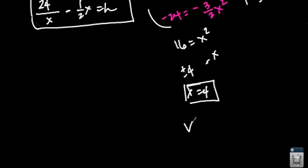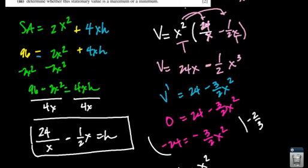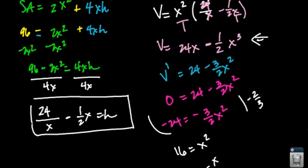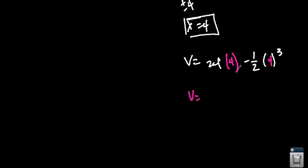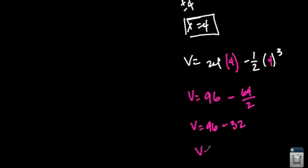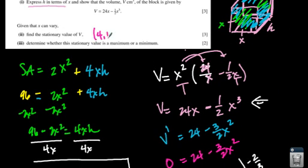Now I need to find the volume when the base length is 4. Going back to the volume equation and plugging in x = 4: V = 24(4) − (4³)/2 = 96 − 64/2 = 96 − 32 = 64. So the stationary value of V is 64 cubic centimeters.